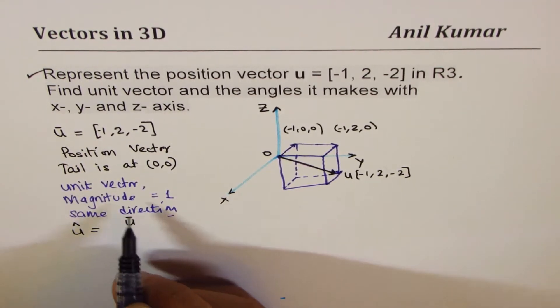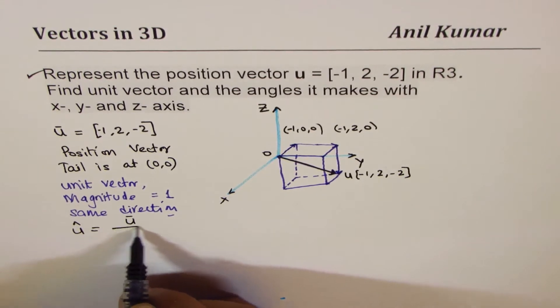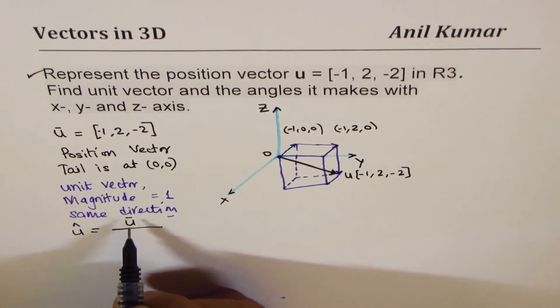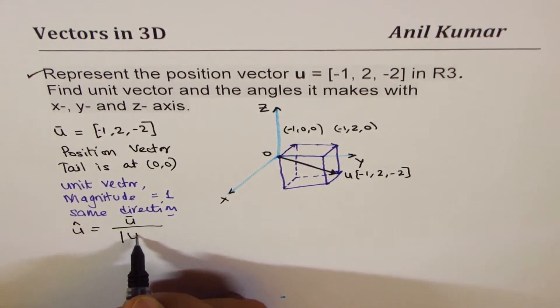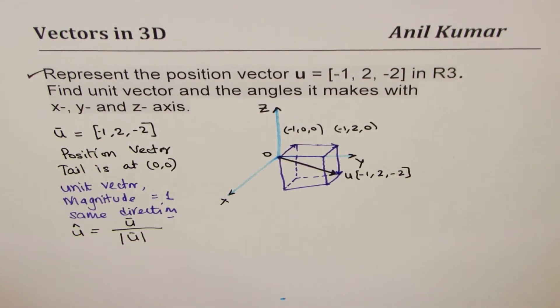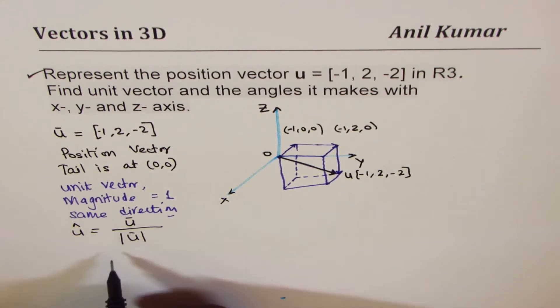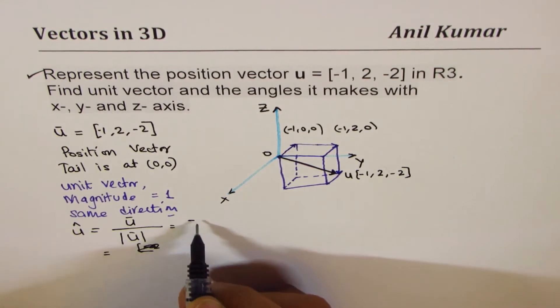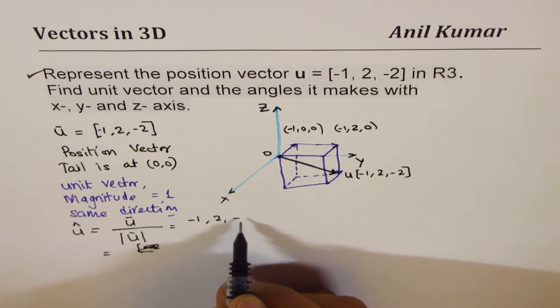How do we get a magnitude of 1? Well, if I divide the vector by its magnitude, I get unit vector. It's so simple. So let's do it. So, that's what we have. Vector is -1, 2, -2.